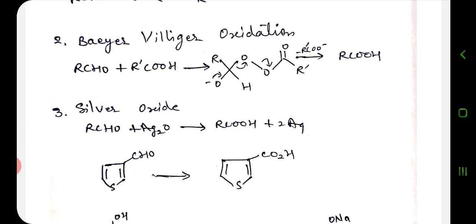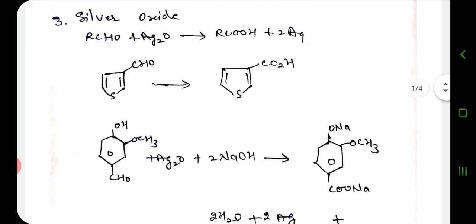It has been observed that hydrogen migrates in the presence of alkyl and phenyl groups. These are also strongly acidic conditions, so we use Jones reagent under such conditions.